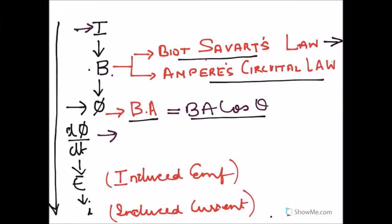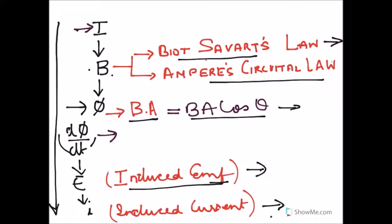Magnetic field produces flux. Flux is given by the mathematical expression B dot A, that is BA cos theta. When there is any change in this flux — that is d-phi/dt — you have an induced EMF, which Faraday found experimentally. This induced EMF gives rise to current. Today we are going to talk about the direction of this current.